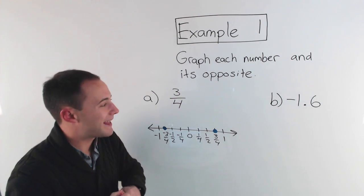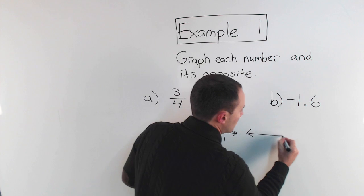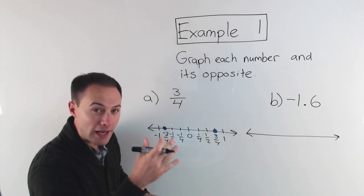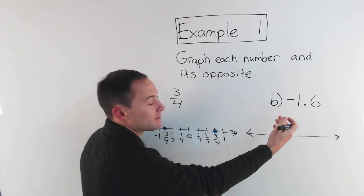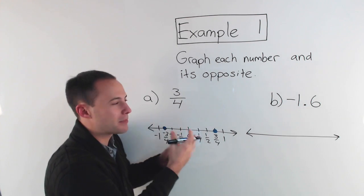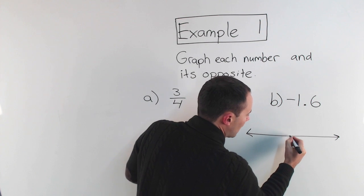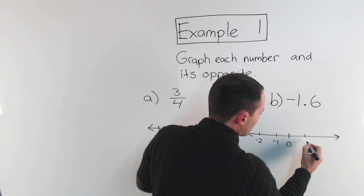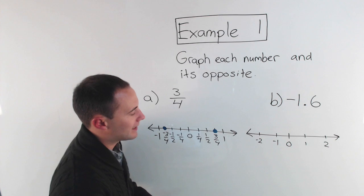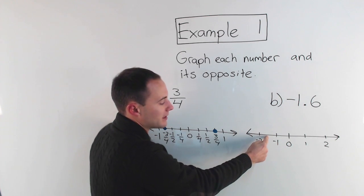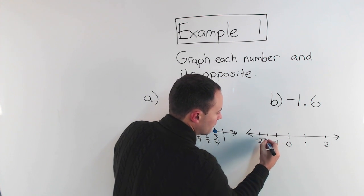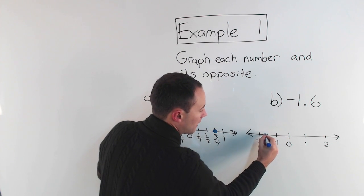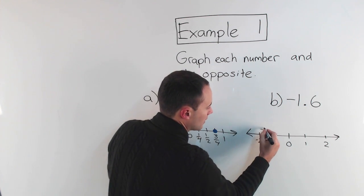Let's try part B. We're going to graph negative one-point-six and its opposite. I'll start with a number line. I know negative one-point-six is in between negative one and negative two — it's farther to the left than negative one, but not quite all the way to negative two. Starting with zero, there's negative one and negative two. Negative one-point-five would be exactly in between, so negative one-point-six is going to be a little bit farther to the left — probably about there. I'll label that negative one-point-six.